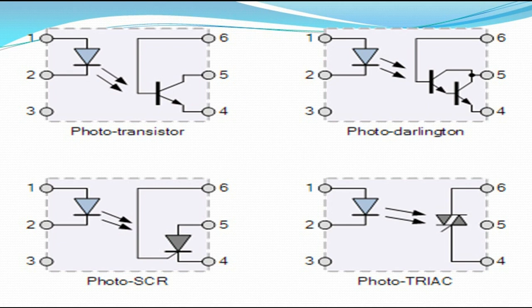Now let's look at the four types. This one is the phototransistor, while this one is the photo Darlington, while this one is the photo SCR, and the last one is the photo TRIAC.